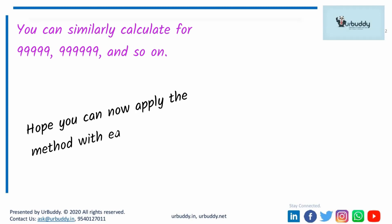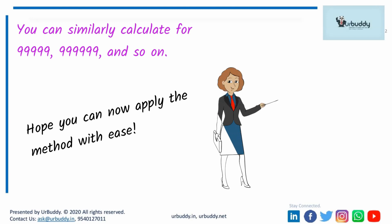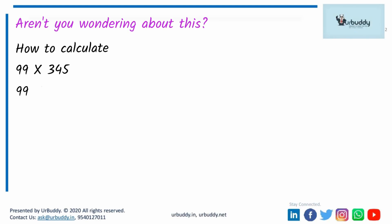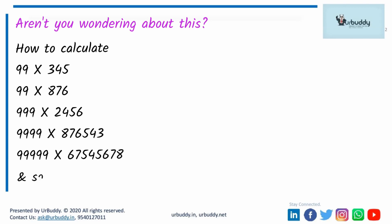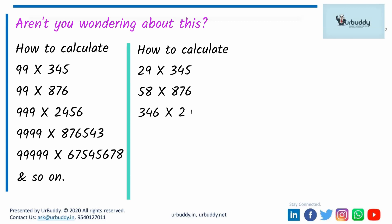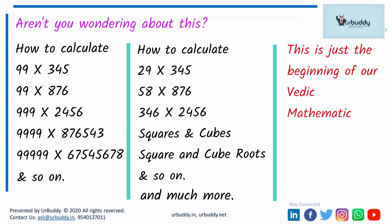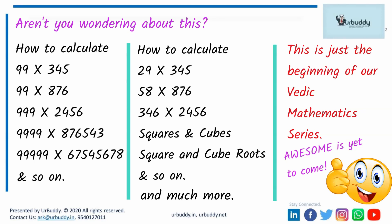Isn't that easy and fast? You can similarly calculate for 99999, 999999, and so on. Hope you can now apply the method with ease — practice to perfect. You might be wondering how to calculate when we need to multiply 99 by 345, since 345 has three digits and this method can't be used. Vedic mathematics has another method for that, which we will cover in coming videos — along with squares, cubes, square and cube roots, general multiplication, division, factorization, quadratic equations, and much more.